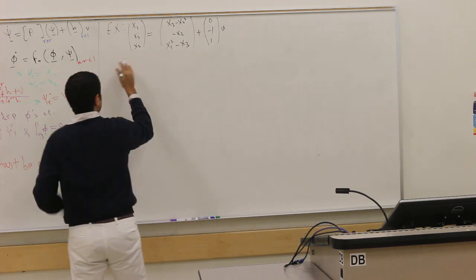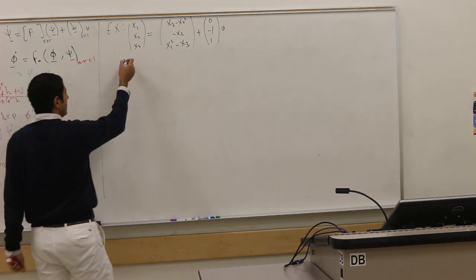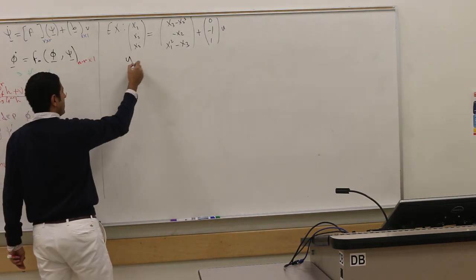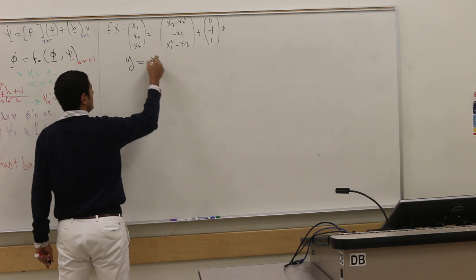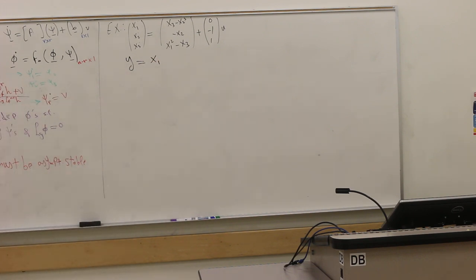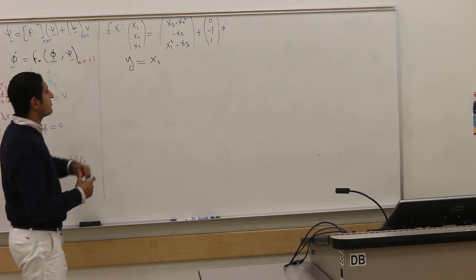I will define my output here to be x₁. The system now is not complete. If you want to do input-output linearization, you need to define your output. Here my output is x₁. Typically it's the thing you can measure. But if I have freedom, I will define it to be x₁ hoping that I will get relative degree two.